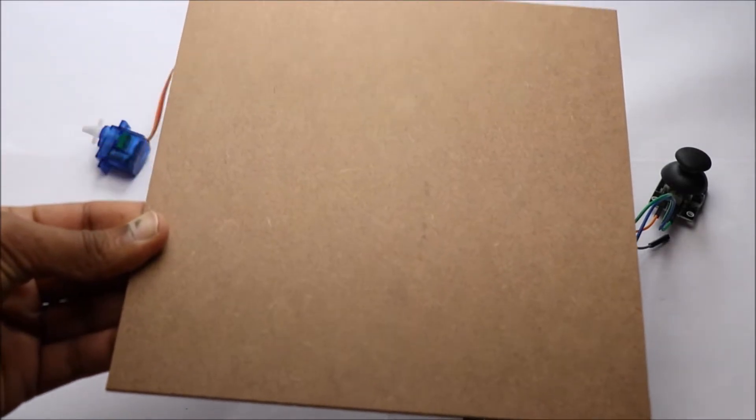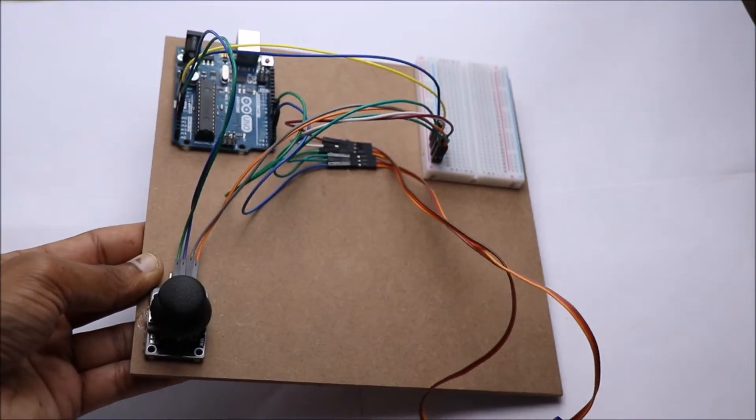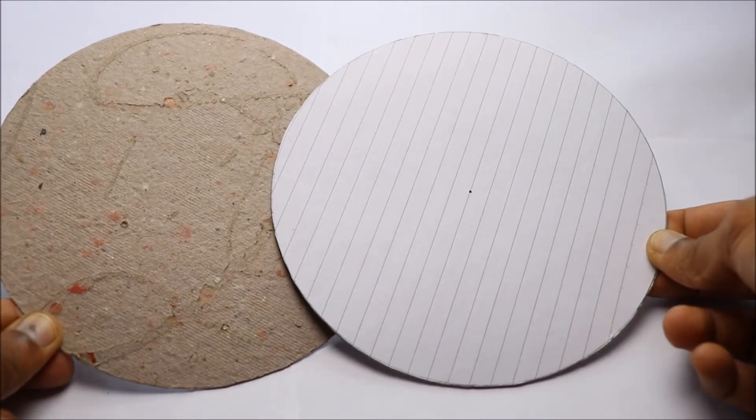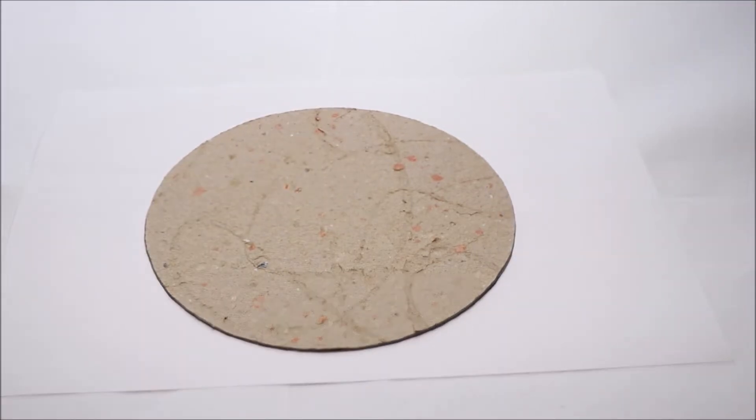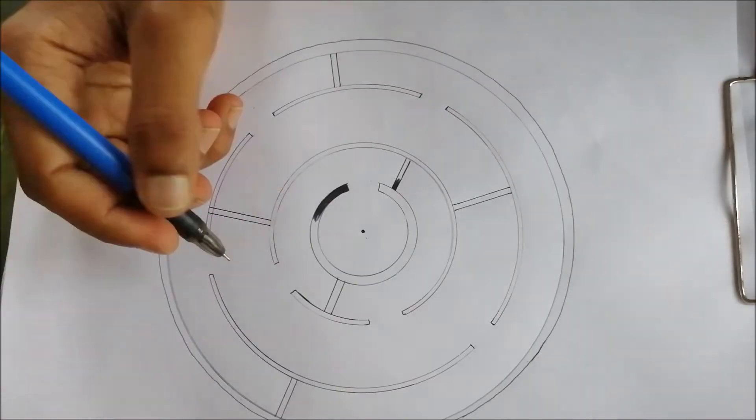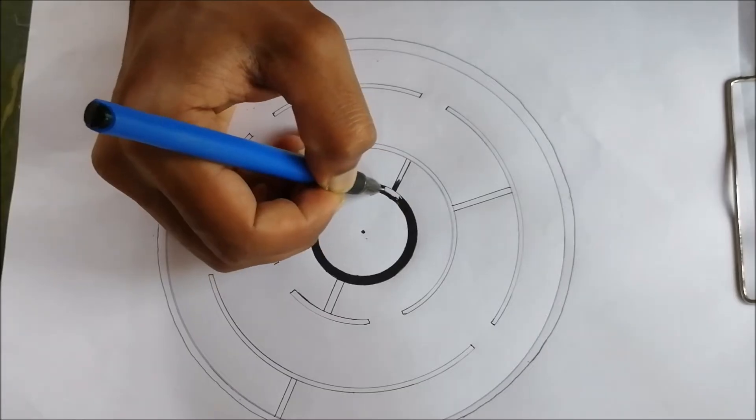I'll put all the components on this MDF board. To make the circular maze, I will be using two round pieces of cardboard. Drawing the custom maze took me quite a few hours.